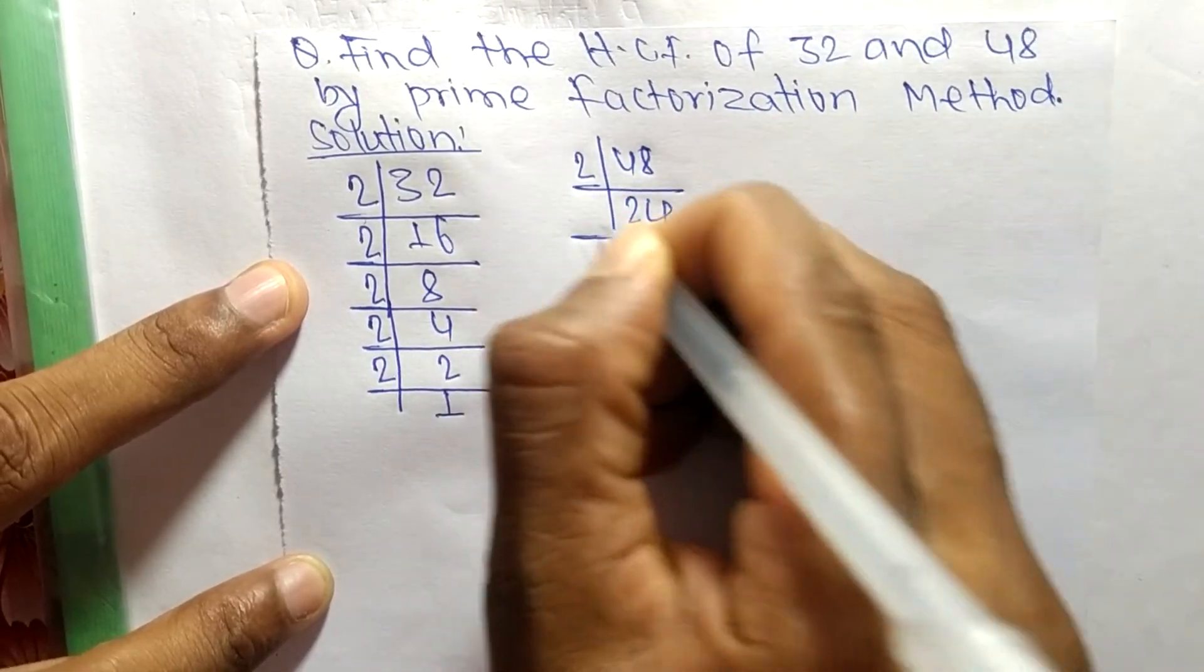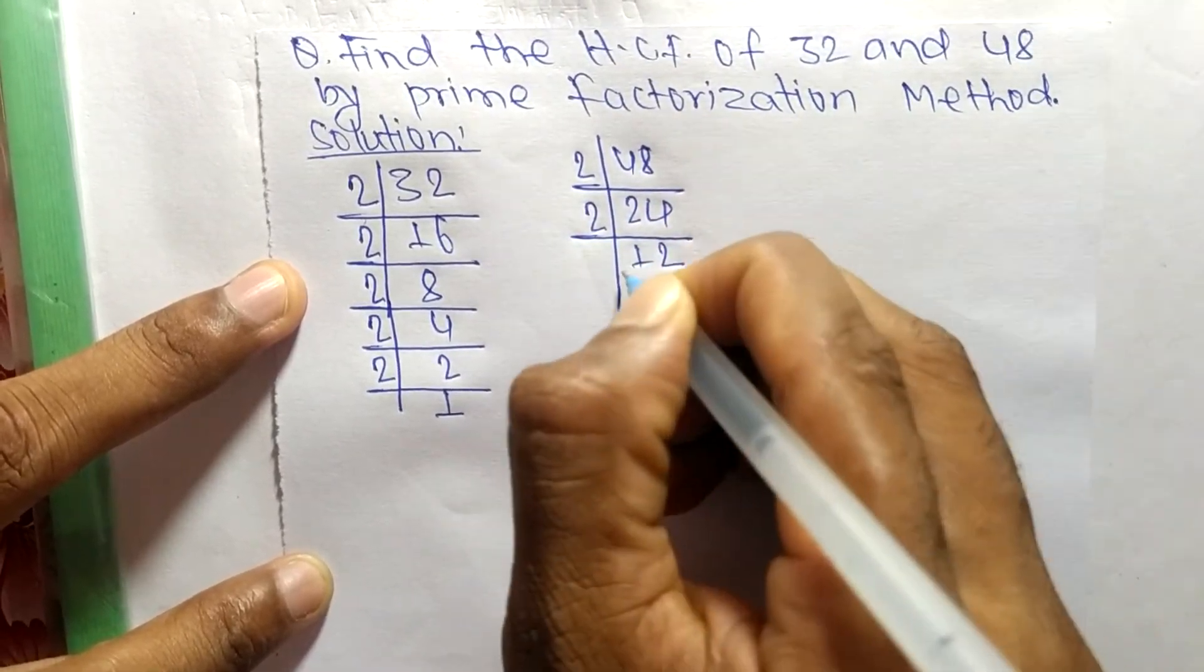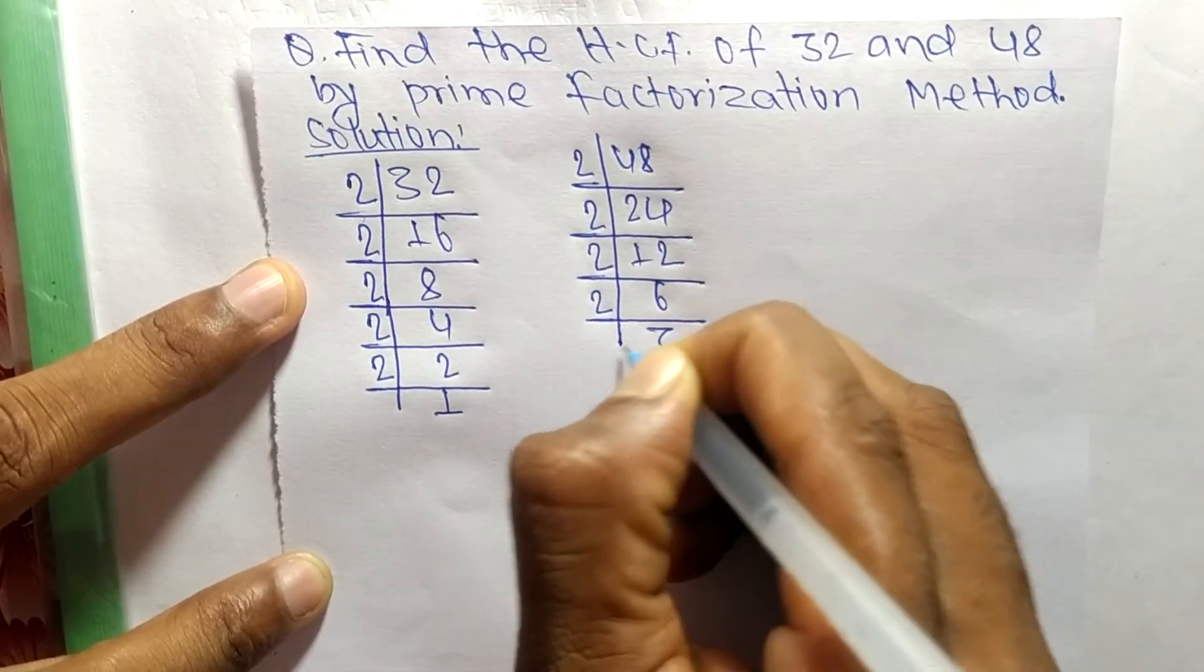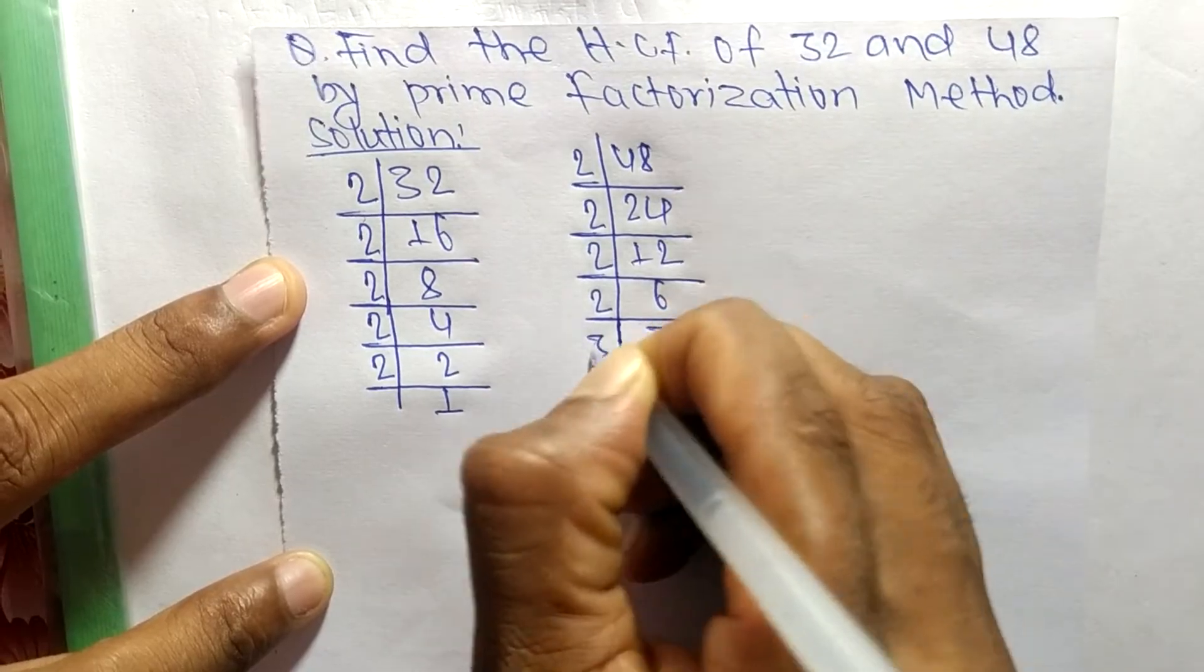The prime factors of 48 are: 2 times 24 means 48, 2 times 12 means 24, 2 times 6 means 12, 2 times 3 means 6, and 3 times 1 means 3.